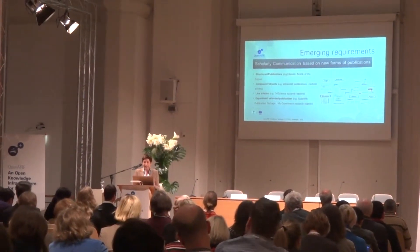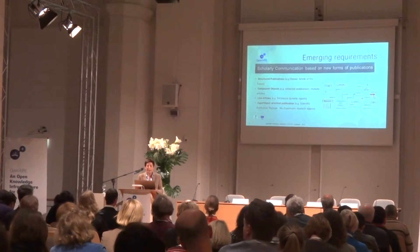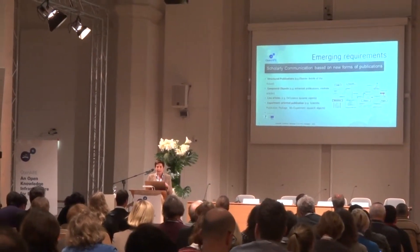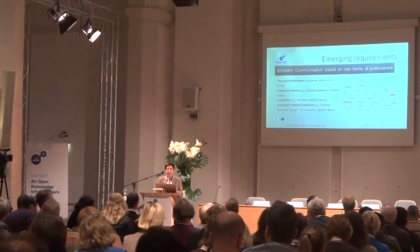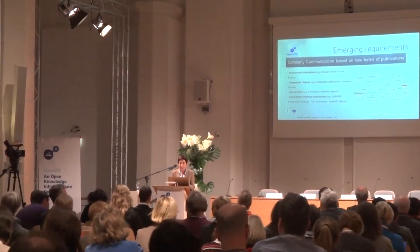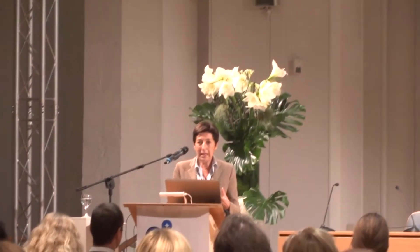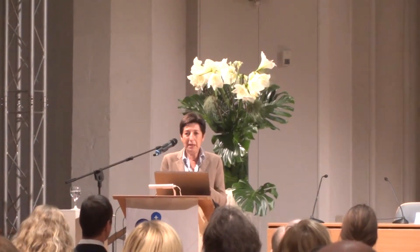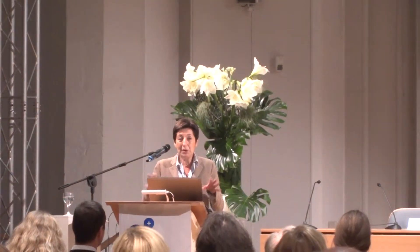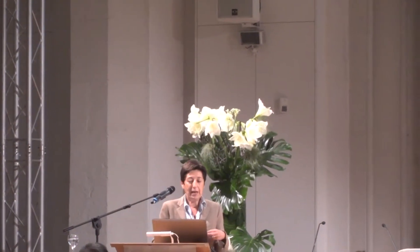There is a big movement saying that in order to better understand the scientific result, you need a lot of different complementary information about the context. In the computer science world, there are a lot of initiatives for defining new models for these publications, and these have different names. I personally believe that there will be different models because of different scientific communities and different needs. For example, the Erziger article of the future, which is one example of structural publication that actually has different pieces put together.